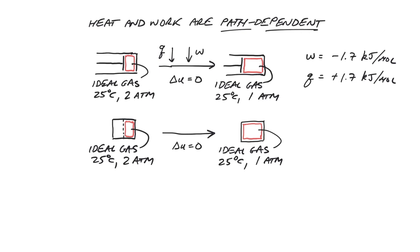Since U and V are both state properties, all other properties must also be the same in the final state as the previous process, including temperature and pressure at 25°C and 1 atm. However, unlike the previous path, this unrestrained expansion involves no heat and no work. The beginning and ending states are the same, so delta U is the same. But the paths are different, so the heat and work are different. All the first law tells us is that heat and work must add up to delta U — it does not prescribe what Q and W are. Our choice of path or other constraints do.